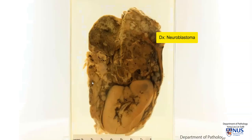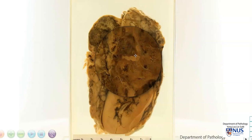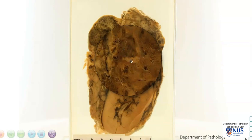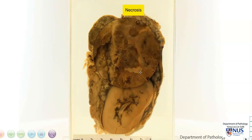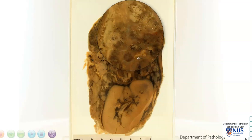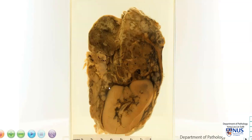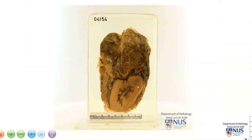Grossly, we can see that it is an irregular variegated appearing fleshy mass. There are some pale areas and some darker areas — these geographic pale areas among the darker areas represent necrosis. The dark areas represent hemorrhage. So overall it has a very variegated appearance with different colors in different areas. We don't see any invasion directly into the kidney in this particular plane.